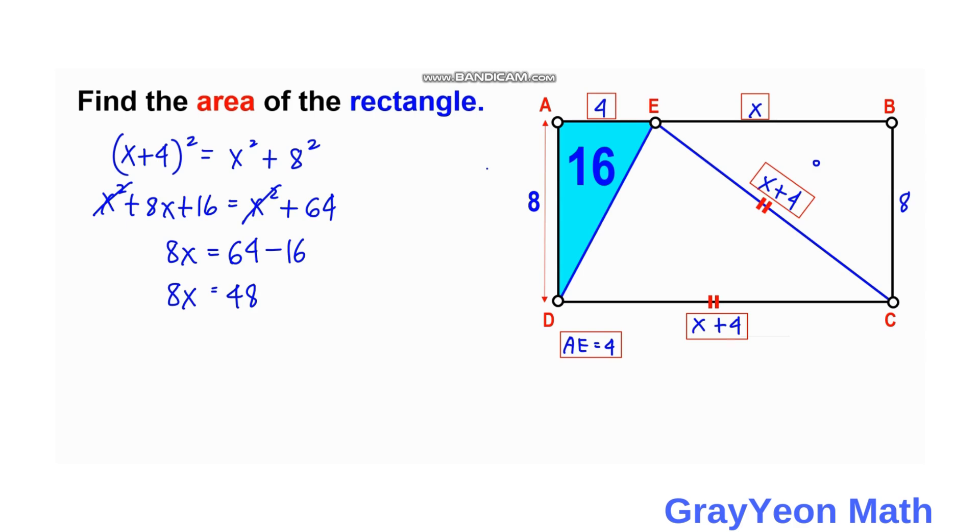Dividing both sides by 8, it cancels out and gives us X equals 6 units.